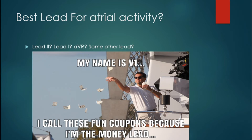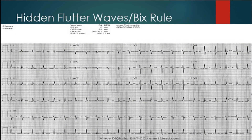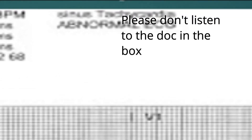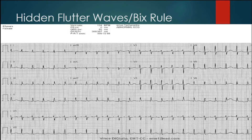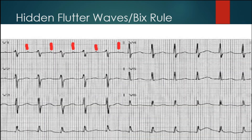Now we can go into finding those pesky hidden flutter waves. Normally when I see atrial flutter, it's never those perfect and beautiful flutter waves that everyone sees in textbook examples. Let's see if you can find them in this example — remember, look in V1 first and then look around the whole 12-lead. Let me zoom in a bit. Here you can see atrial activity right in the middle of the QRS complex, and this is going to be called the Biggs rule.